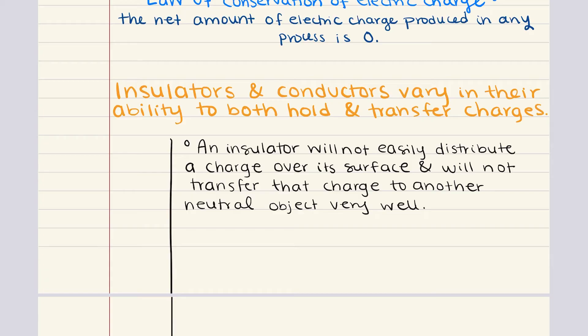When a charge is placed on an insulator, it does not spread out evenly over the surface of the material. Instead, the charge tends to remain localized, staying in one place rather than distributing itself. Because of this property, insulators do not transfer charge easily to other objects. A good example of an insulator is rubber. If you try to charge a rubber object, the charge will remain confined to the area where it was applied, and it will not easily be transferred to a neutral object.